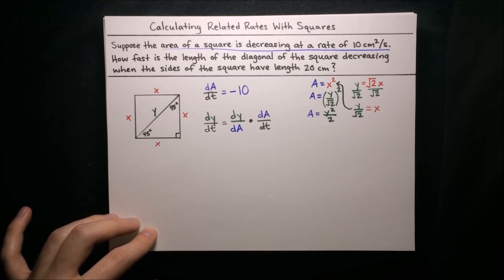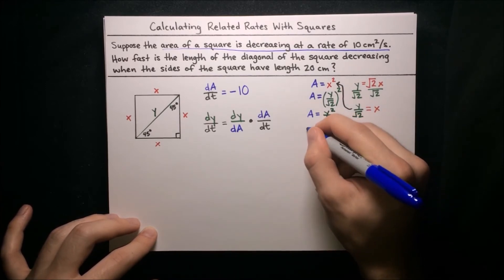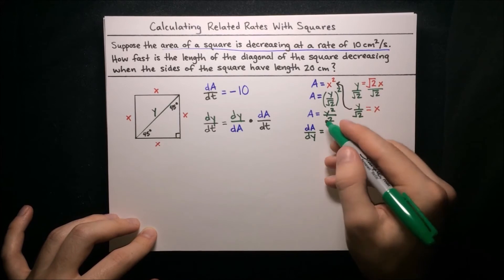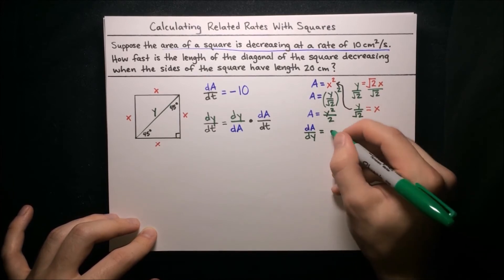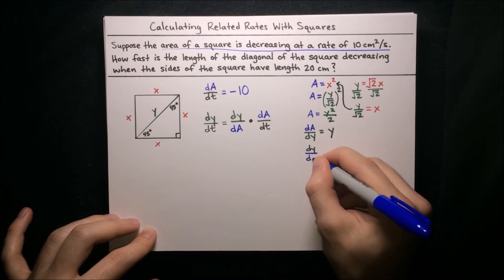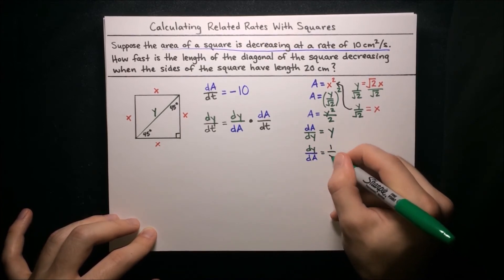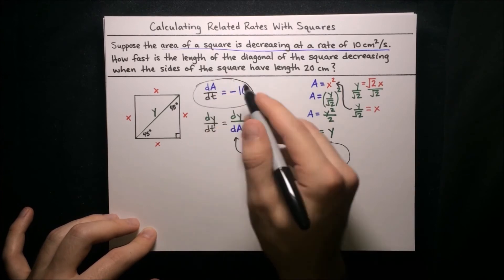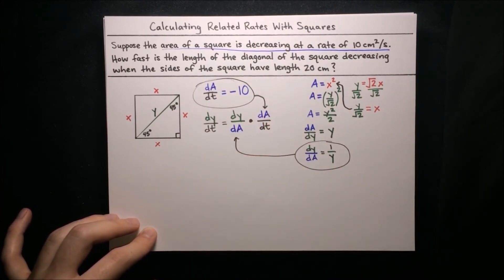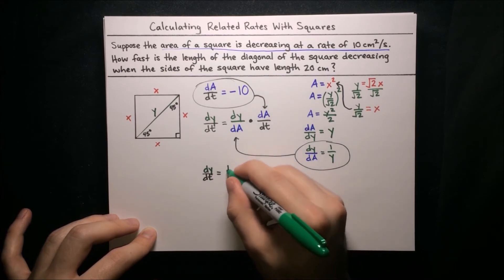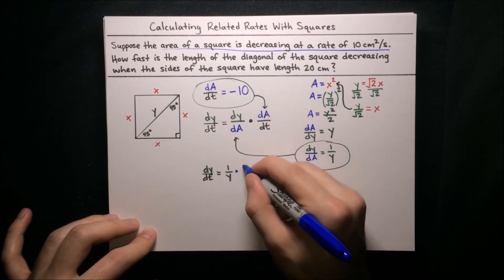Now let's differentiate with respect to y, since that's easier the way our equation is set up, and then take the reciprocal to get dy/dA. Differentiating: dA/dy equals, using the power rule, y squared over 2 becomes 2y over 2, which is just y. Taking the reciprocal, dy/dA equals 1 over y. So we can put that in for dy/dA in our equation. dA/dt we had at the beginning — that's just negative 10.